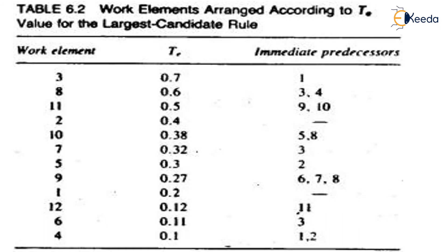For example, with work elements 1 to 12, arranged in descending order by task time: element 3 is first at 0.7, element 8 at 0.6, element 11 at 0.5, element 2 at 0.4, element 10 at 0.38, element 7 at 0.32, element 5 at 0.3, element 9 at 0.27, element 1 at 0.2, element 12 at 0.12, element 6 at 0.11, and element 4 at 0.1. Immediate predecessors are also determined from these values.